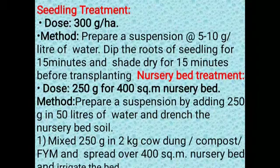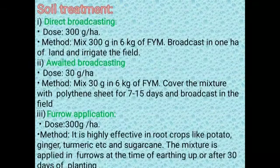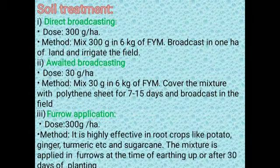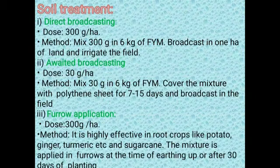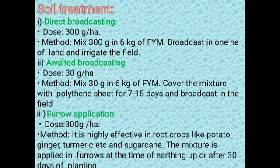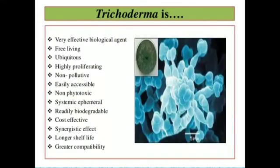For soil treatment: for direct broadcasting, use 300 grams per hectare of biocontrol agent. For waited broadcasting, also use 300 grams per hectare. For furrow application, again use 300 grams per hectare. Furrow application is mostly effective for root crops like potato, ginger, and turmeric. The mixture is applied in furrows at the time of earthing up or after 25 to 30 days of planting.